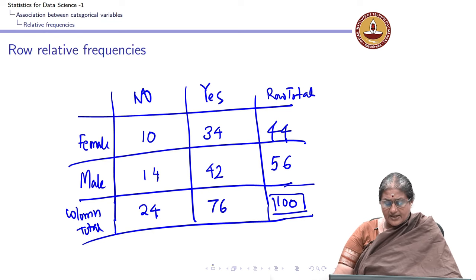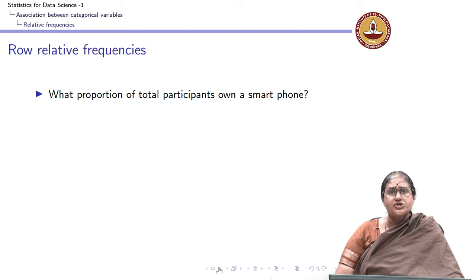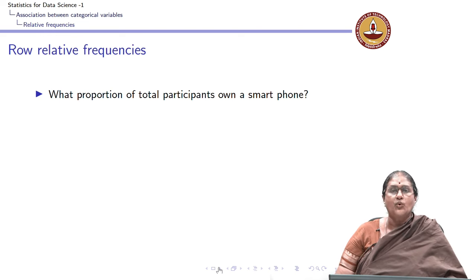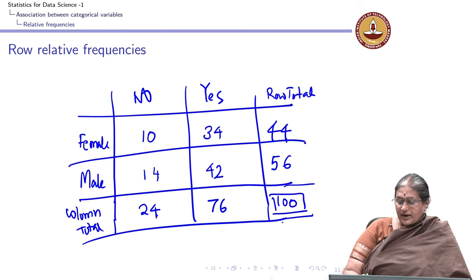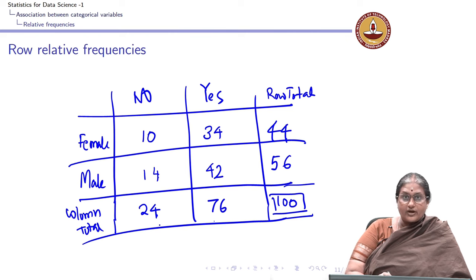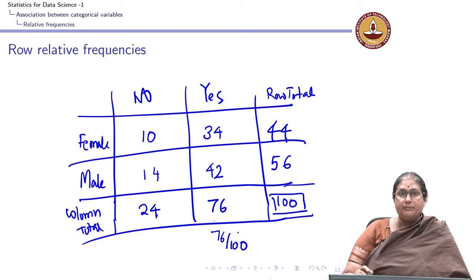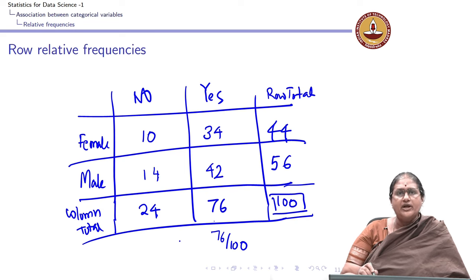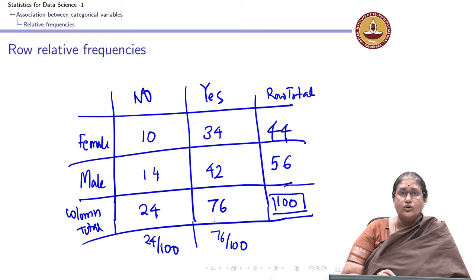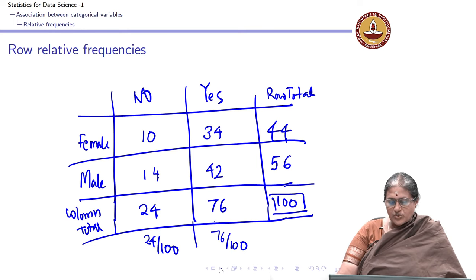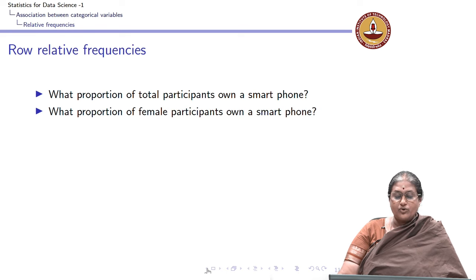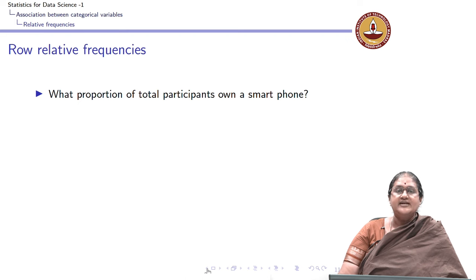Now suppose I am interested in asking: what is the proportion of total participants who own a phone? That is simple — total participants are 100, of which 76 people own a phone and 24 do not. So 76 out of 100 people actually own a phone. This is the proportion of total participants who own a phone: 76 percent.